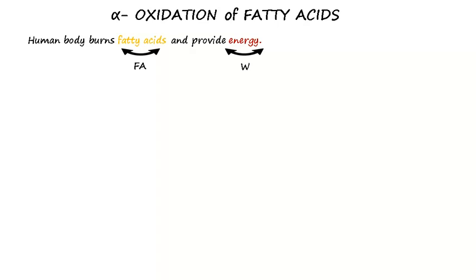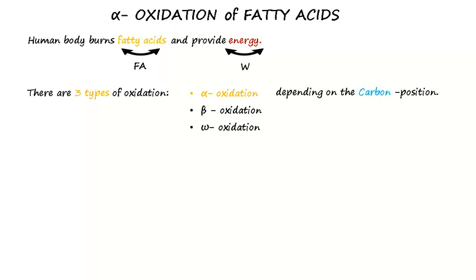There are three ways the human body burns fatty acids: Alpha Oxidation, Beta Oxidation, and Omega Oxidation. This depends on the carbon position.